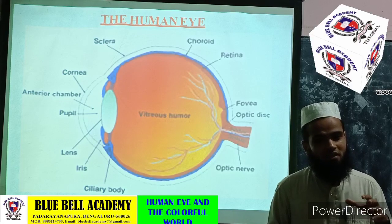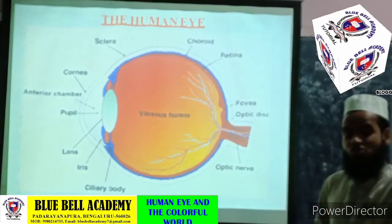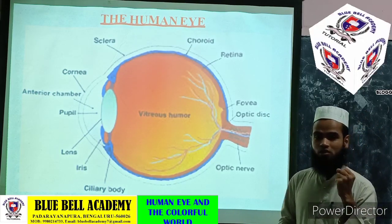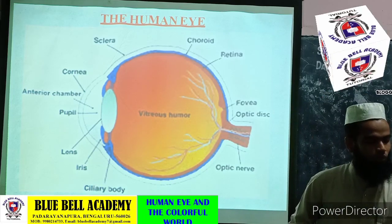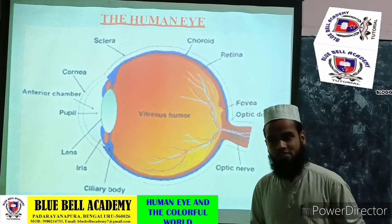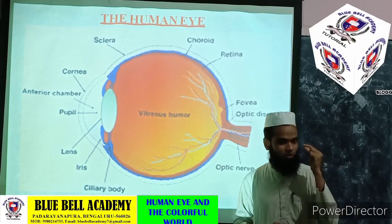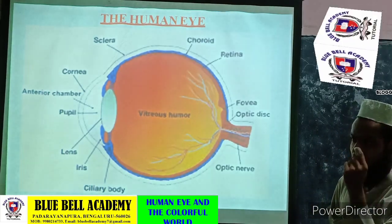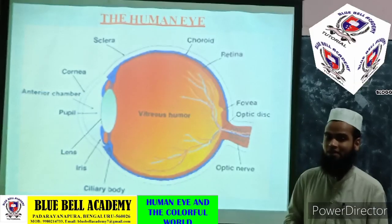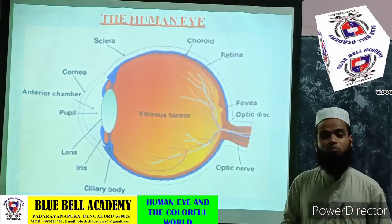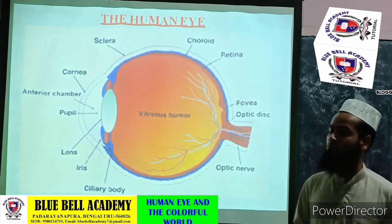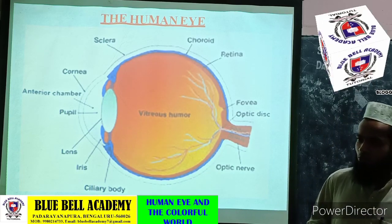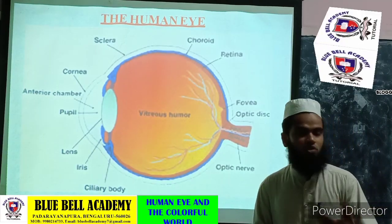The eyebrow is one of the accessory parts. It provides shade during bright sunlight and it protects our eyeball from the dust which falls from above. Next, the eyelashes are the small hairs attached to the eyelids. They perform a protective function, protecting the eyeball from dust particles. Whereas the eyelids are helpful to open and close our eyeball.